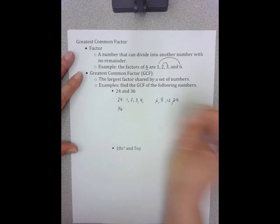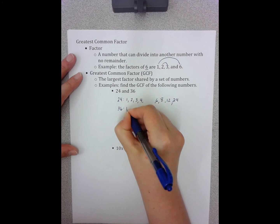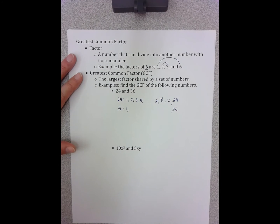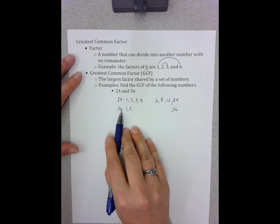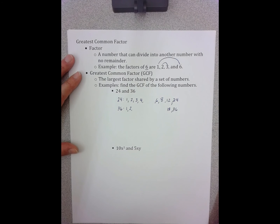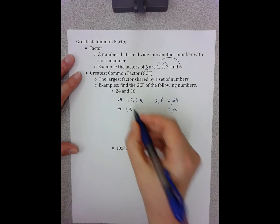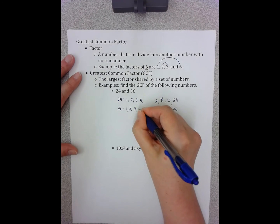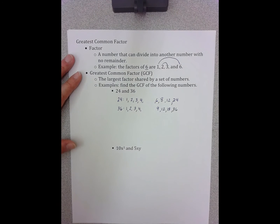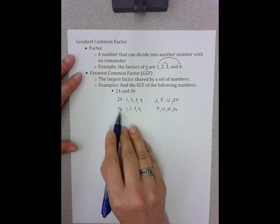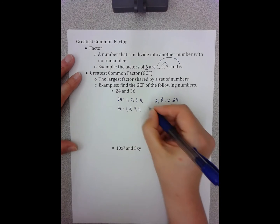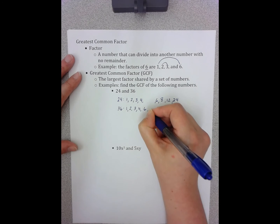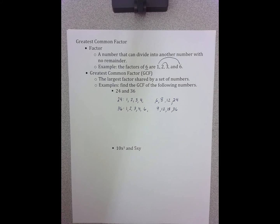Let's look at 36. Starting in the exact same way — 36 is 1 times 36. Then I start walking up the number line. 2: yes, 2 goes into 36, it's an even number, so that's 18. 3: yes, it is divisible by 3, so that's 12. 4: yes, 4 also works — 4 times 9 equals 36. 5: no, it doesn't end in 5 or 0, so it's not divisible by 5. 6: yes, it's divisible by 6, and its partner is 6. So I don't need to write it again — I've reached the middle point, which means I don't have to check any other numbers.